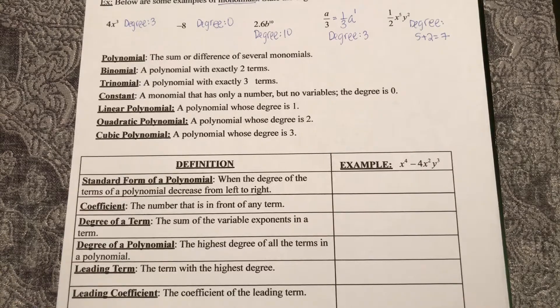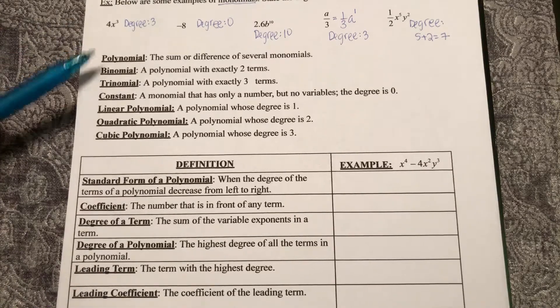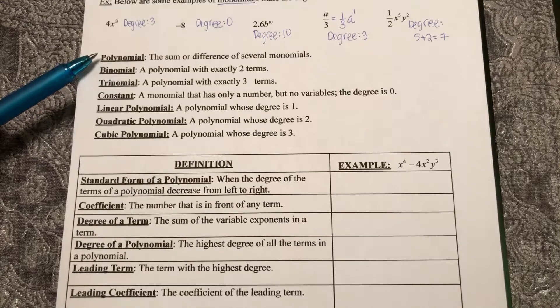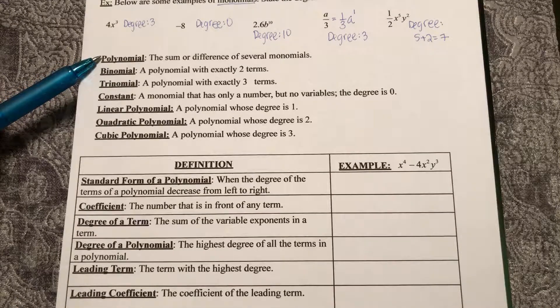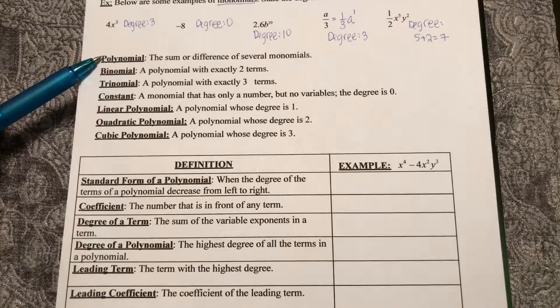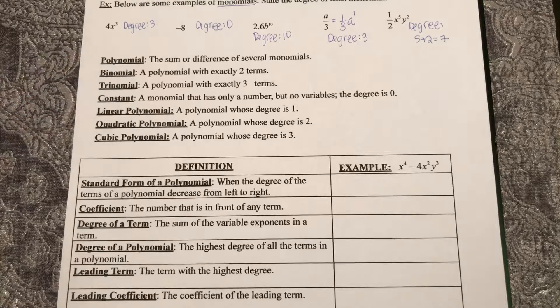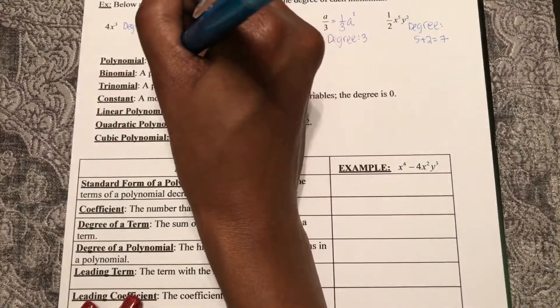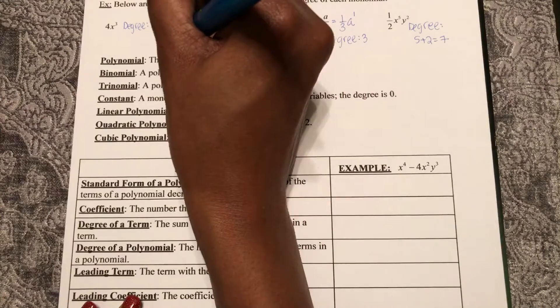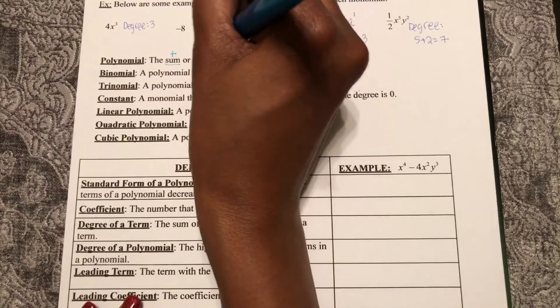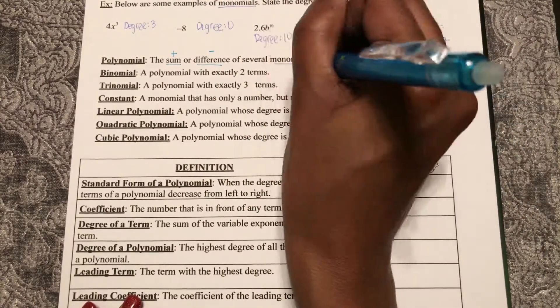So moving into more vocabulary words, a polynomial, think of poly meaning several, is the sum or difference of several monomials. So the key is you're adding or subtracting monomials.